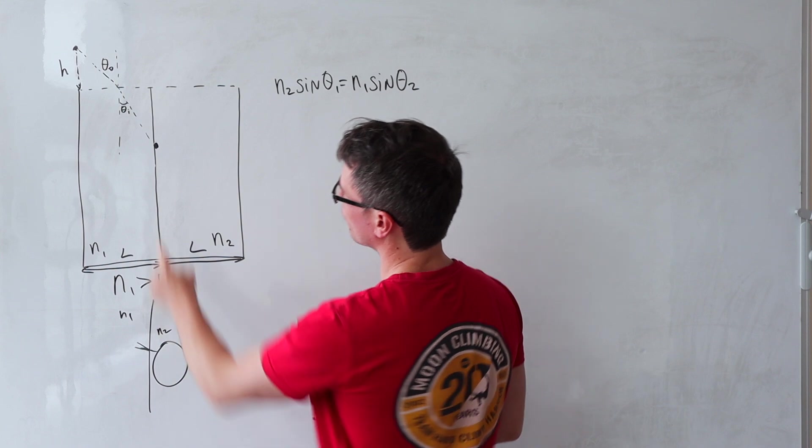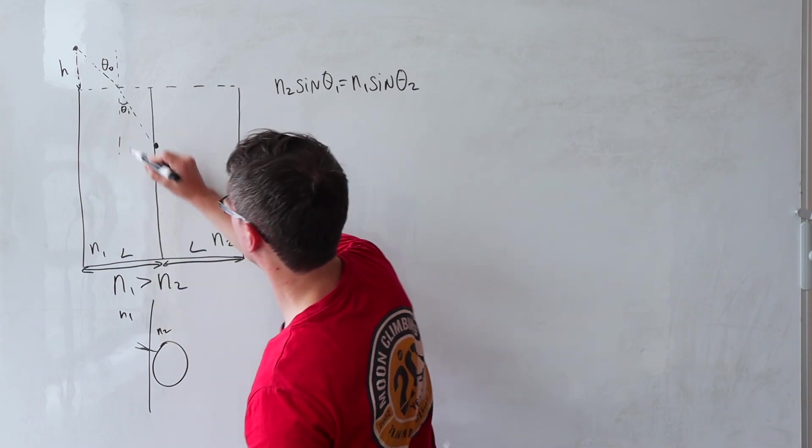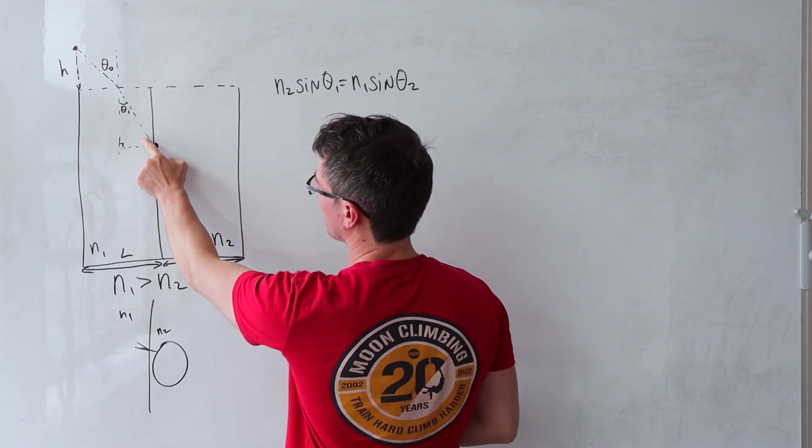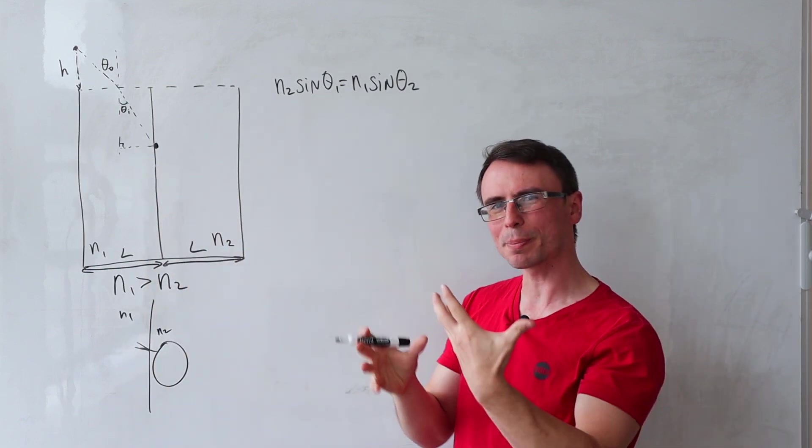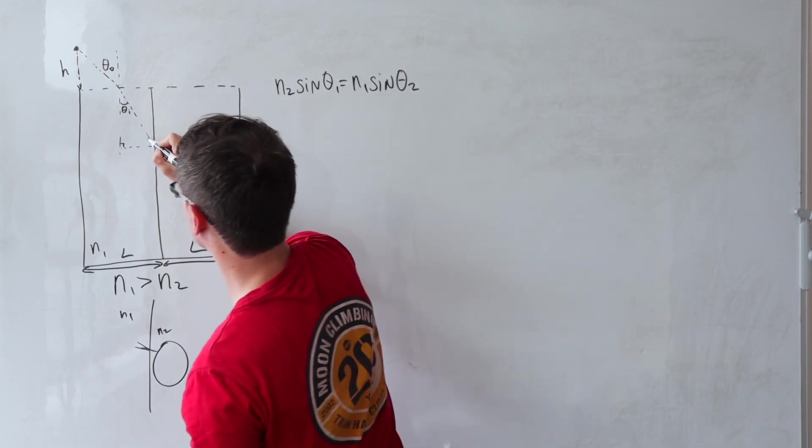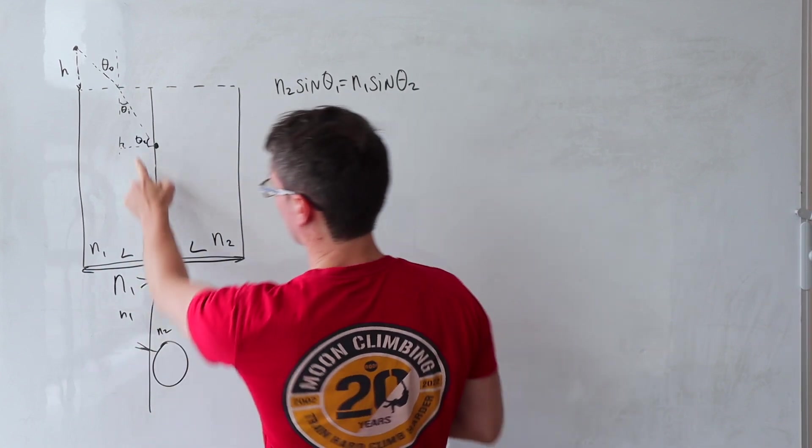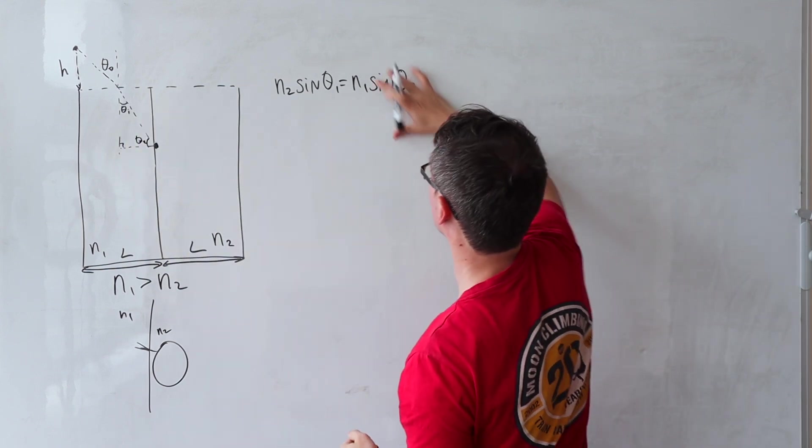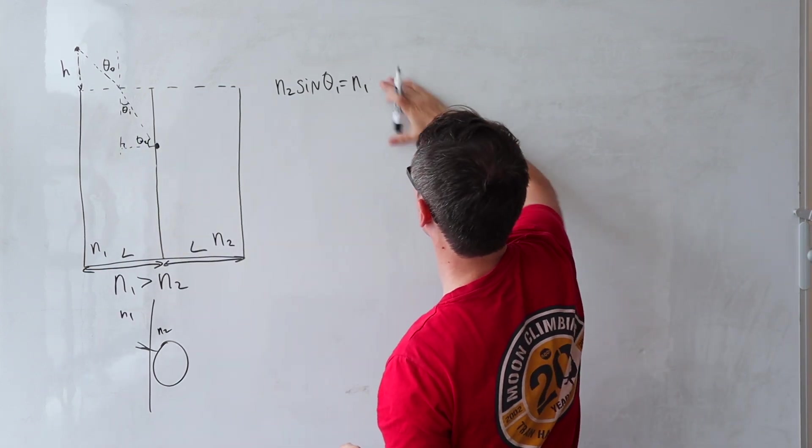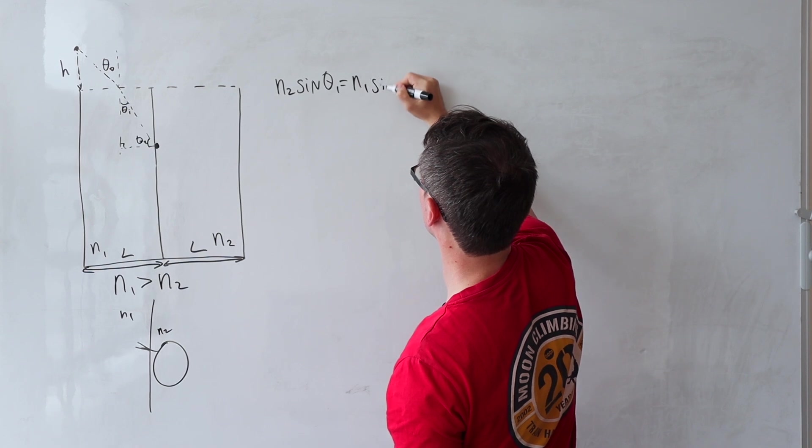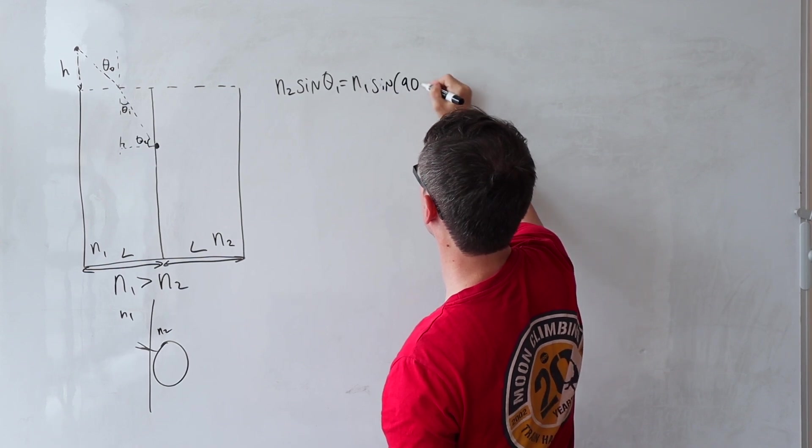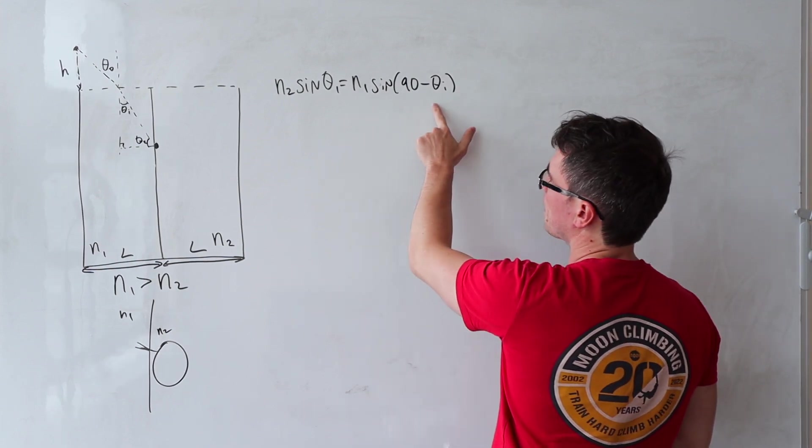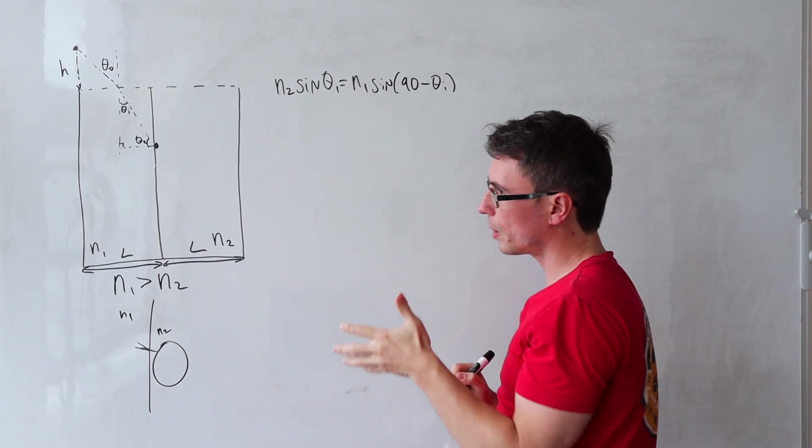Just from the geometry of the problem, we're given this angle. Let's say that this angle here is 90 degrees, meaning that our angle with respect to the normal for the refraction, in other words, our theta two just here, it's just going to be 90 take away theta i. So we can just write over here sine of 90 degrees take away theta i.